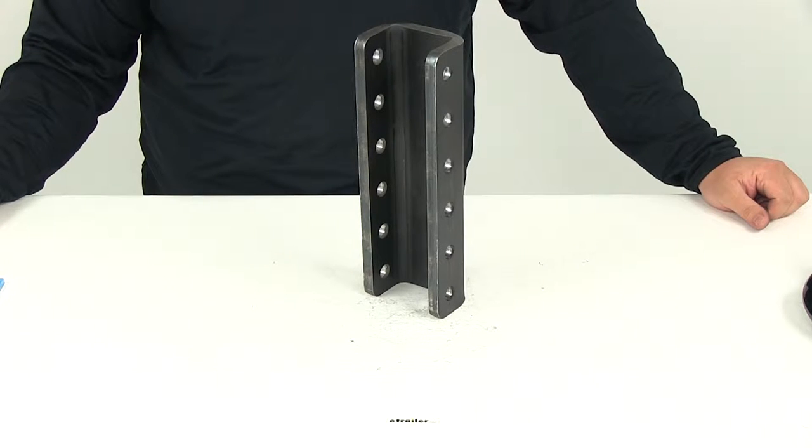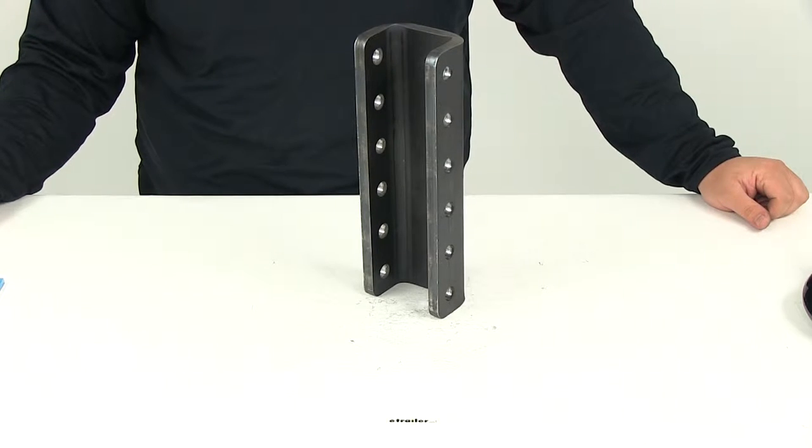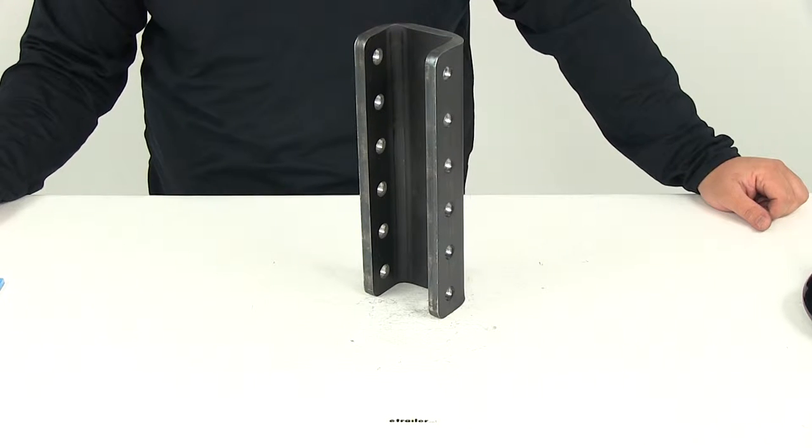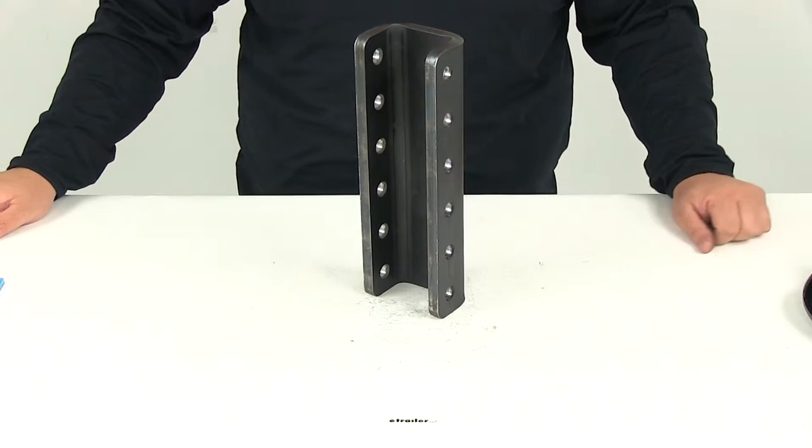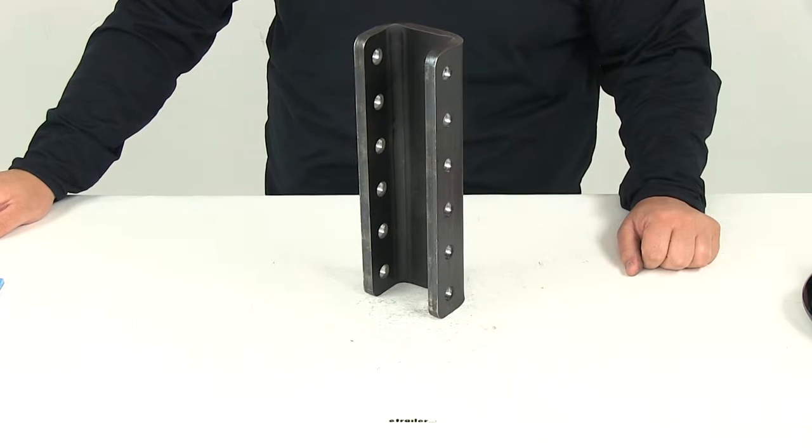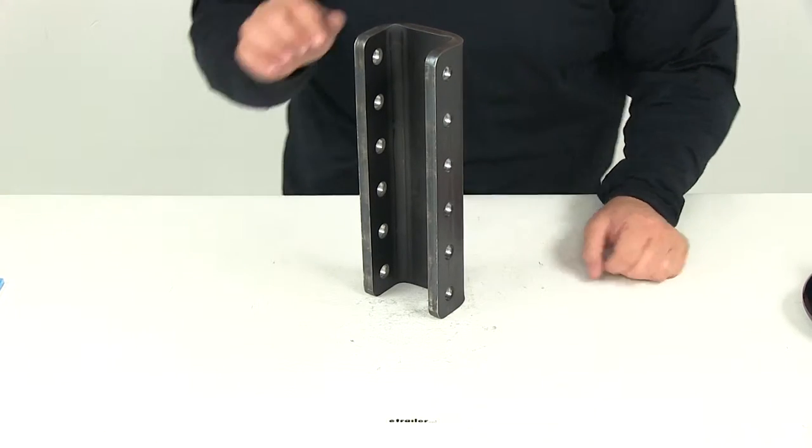Today we're going to be taking a look at part number DM66134. This is the Dimco six-hole adjustable channel bracket. This channel bracket is going to offer five different mounting positions for your ball coupler, lunette ring, or clevis on your trailer.